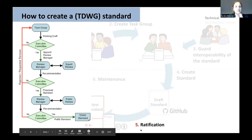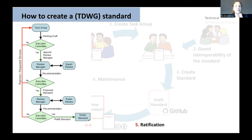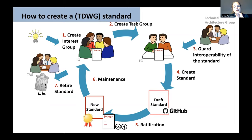The ratification itself is a long process involving different people like the executive committee, and there are two big important reviews. One is an expert review, similar to a peer review article. But then you also have a public review for four weeks where everybody interested in the standard development can contribute and comment. In the end, if everybody agrees, a new standard is accepted. There is usually some maintenance going on, and at some point a standard might be outdated and can be retired.